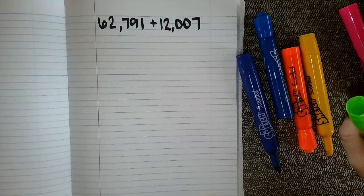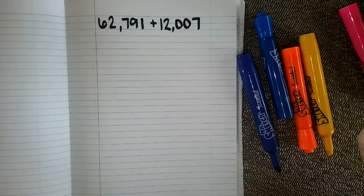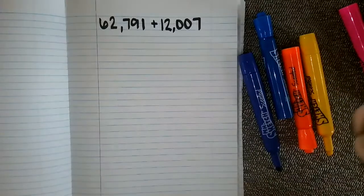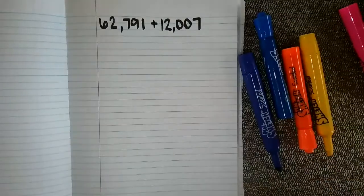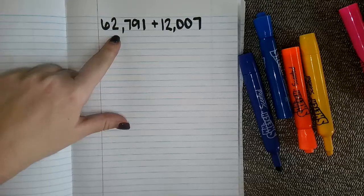So when you are doing the friendly number strategy, it's really important that you look at both of your numbers and you try to find how much it would take to, or how less, how much less it would take to get to that friendly number. So looking at 62,791,